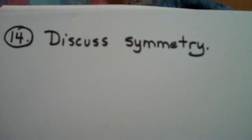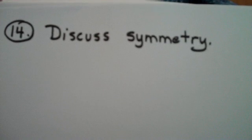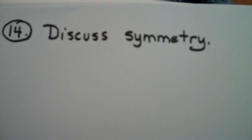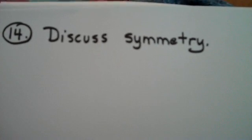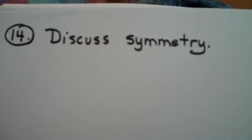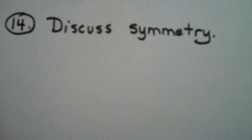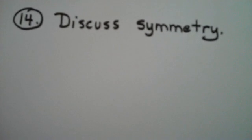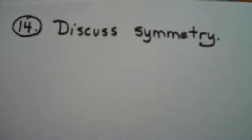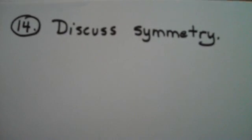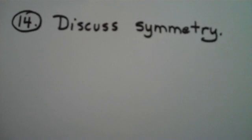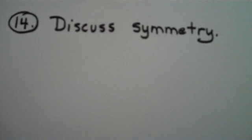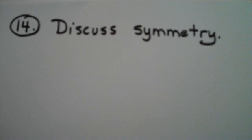Let's continue with our Math 1105 final exam review, question number 14. If I ask you to discuss the concept of symmetry, there were basically three types we considered in class: symmetric with respect to the x-axis, symmetric with respect to the y-axis, or symmetric with respect to the origin. Sometimes it's not symmetric with respect to anything, but if there was going to be symmetry, it would be one of those three.